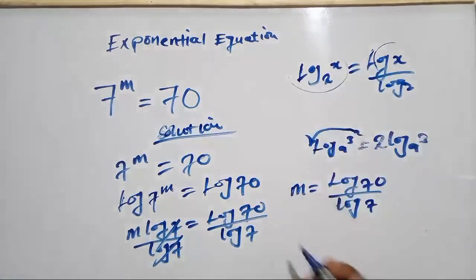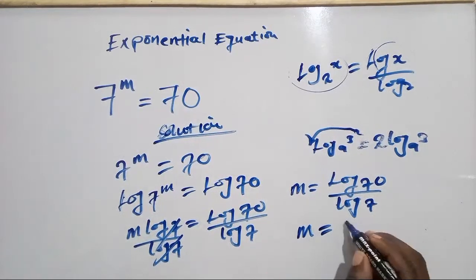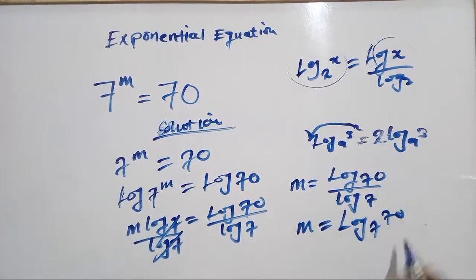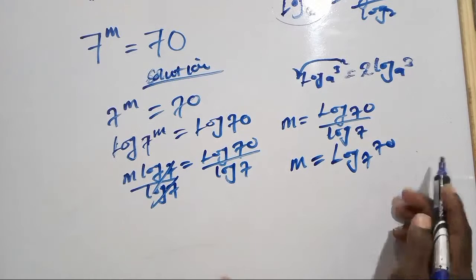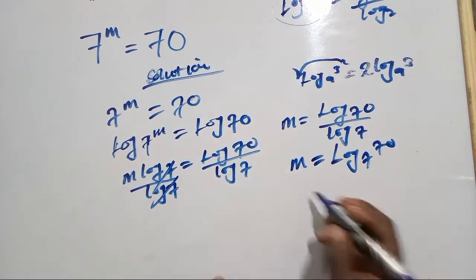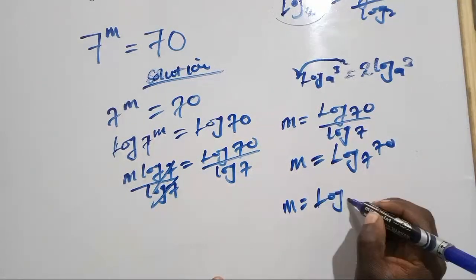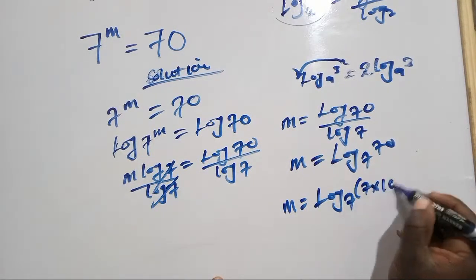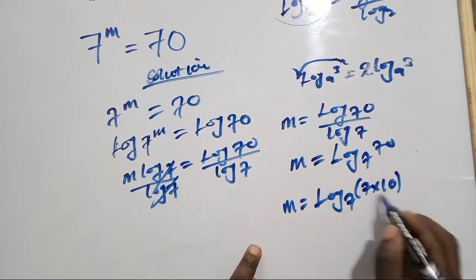And for us to find this 70, that means we can write it as 7 multiplied by 10. So we can say m equals log base 7 of (7 multiplied by 10).